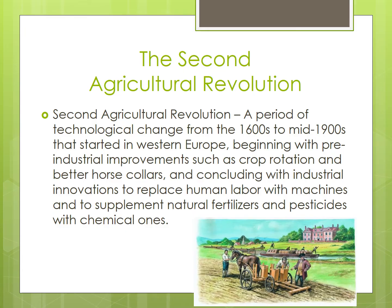The second agricultural revolution was a period of technological change from the 1600s to mid-1900s that started in Western Europe, beginning with pre-industrial improvements such as crop rotation and better horse collars, and concluding with industrial innovations to replace human labor with machines, and to supplement natural fertilizers and pesticides with chemical ones.